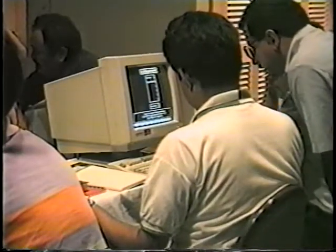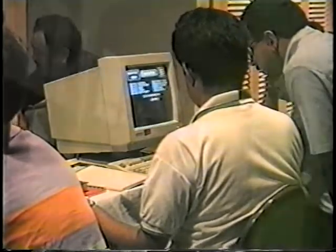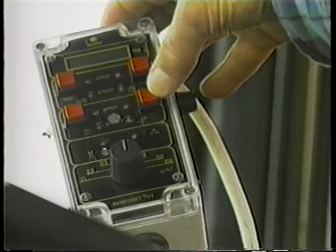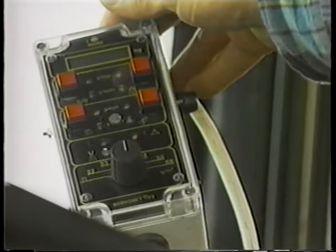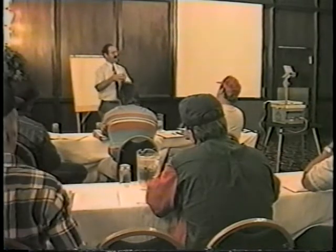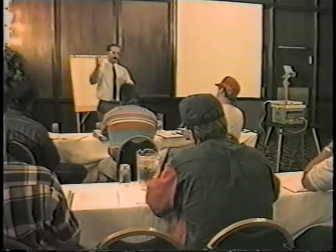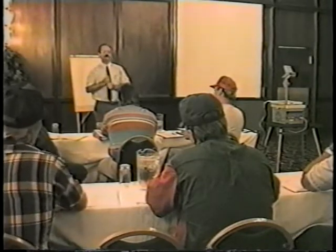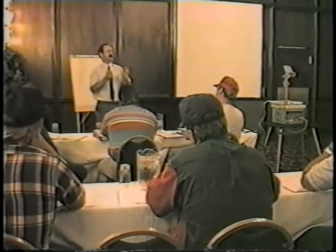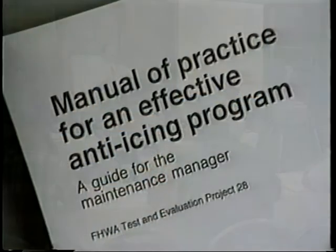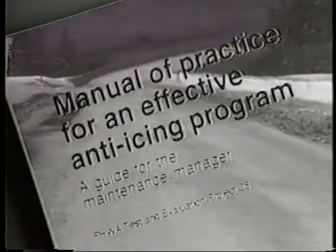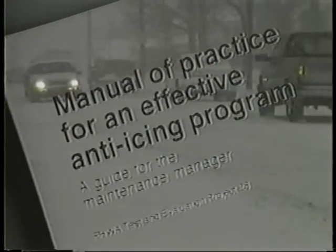New, more effective and more efficient programs must be started. A successful program will require more and better information for making decisions, will use different methods and materials, and will require more emphasis on training. Training can be given by a consultant or by agency staff using material from various sources including SHRP and FHWA studies. Appendix C of the Manual of Practice suggests maintenance actions for preventing the ice pavement bond during six distinctive winter weather events.